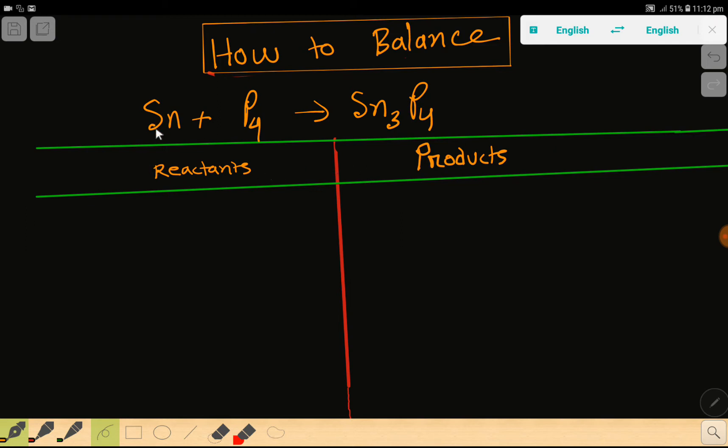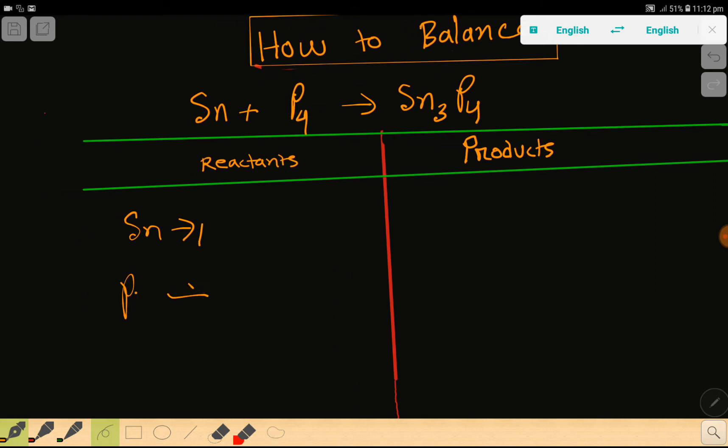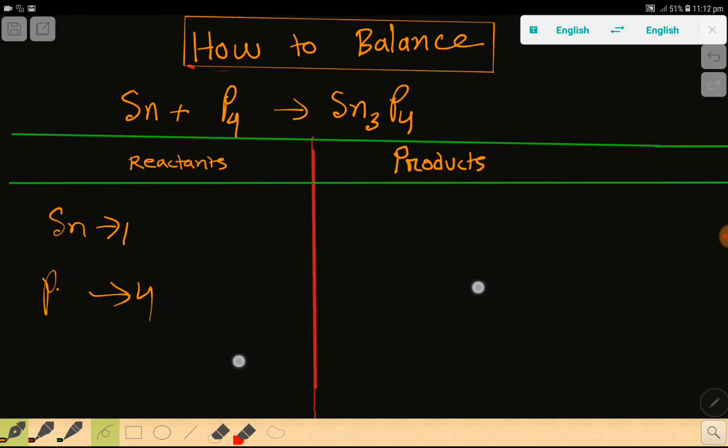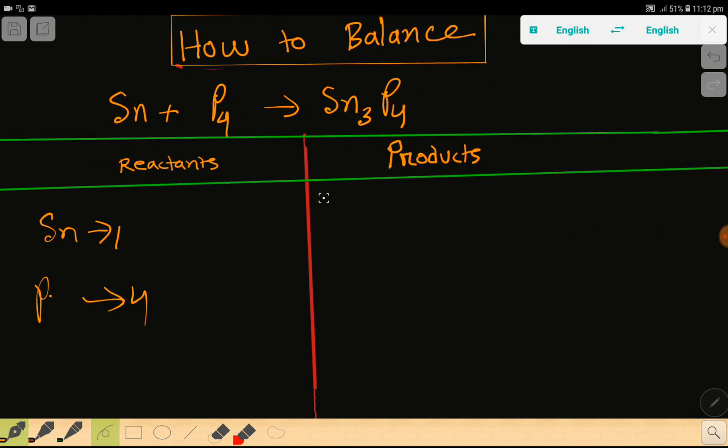In the reactant side, the number of tin is 1, then we have phosphorus here which is 4. Then in the right hand side, we have tin which is 3, then we have phosphorus which is 4.